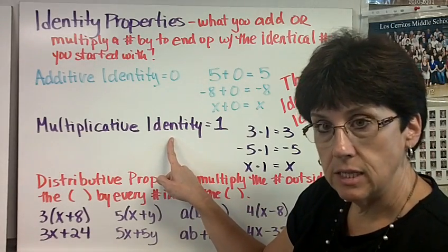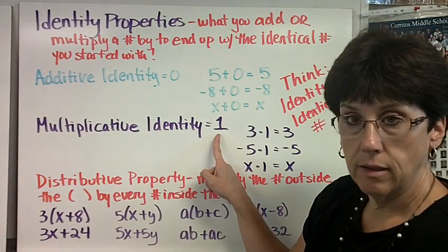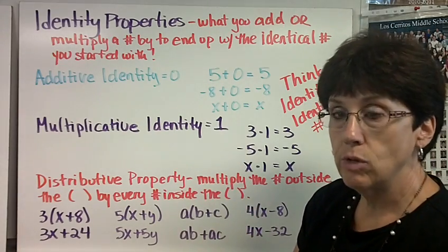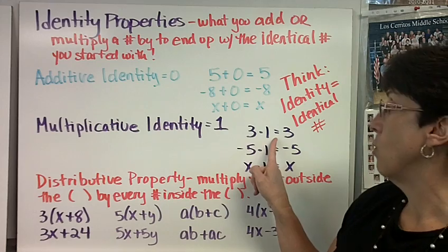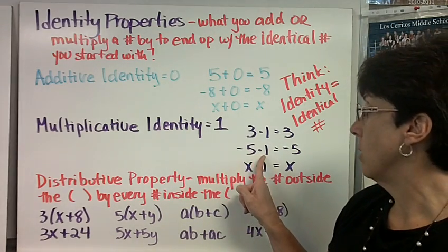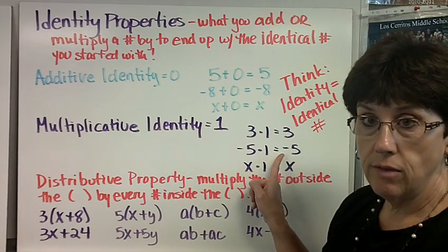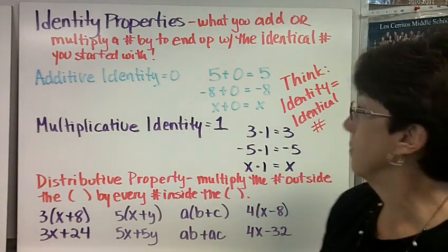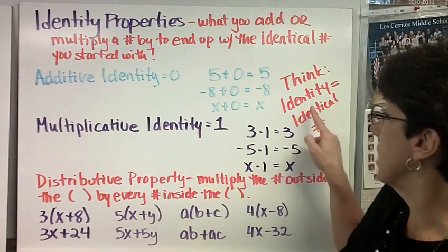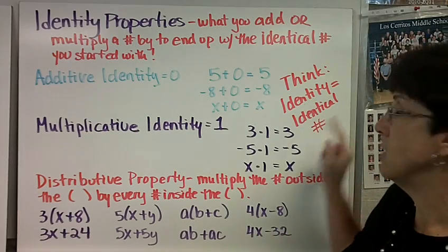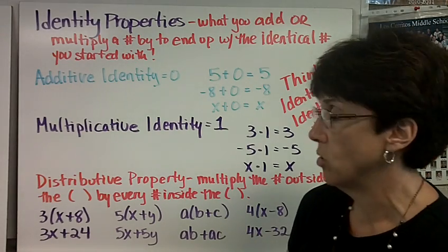The multiplicative identity is 1 because when you multiply something by 1, you get exactly what you started with. 3 times 1 is 3, negative 5 times 1 is still negative 5, x times 1 is still x. So this is what you can think to remember this - identity equals identical number. They're almost the same words.